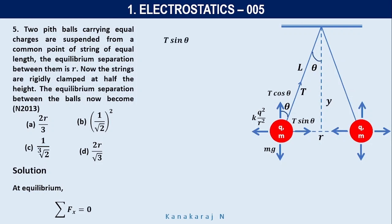Now we can say that T sin theta equals K times Q square by R square. Similarly, the summation of forces acting in the Y direction equals zero because it happens at equilibrium. So T cos theta equals mg. If we divide one equation by the other, we get tan theta equals K times Q square by mg R square.